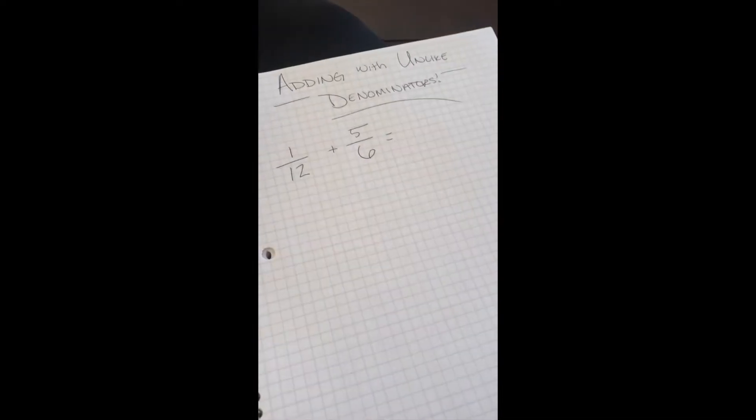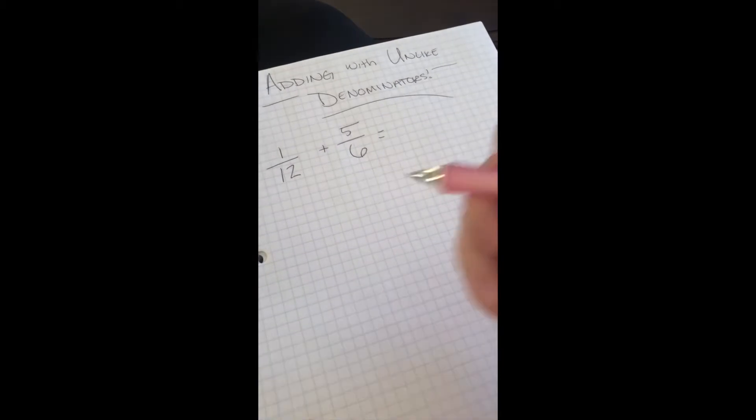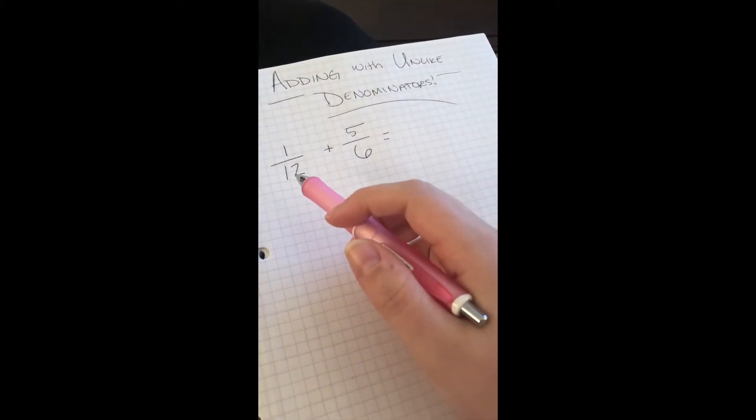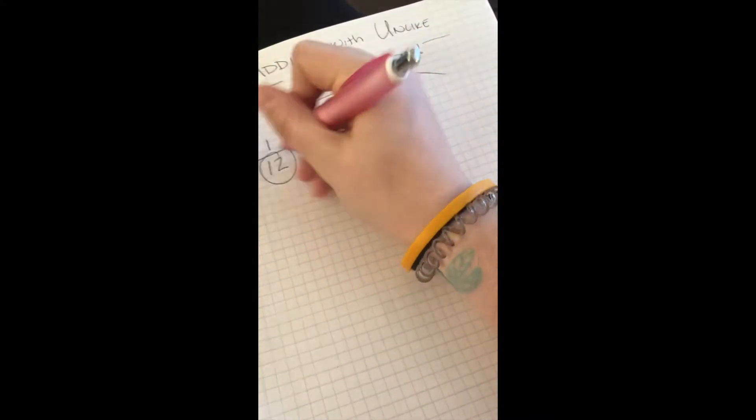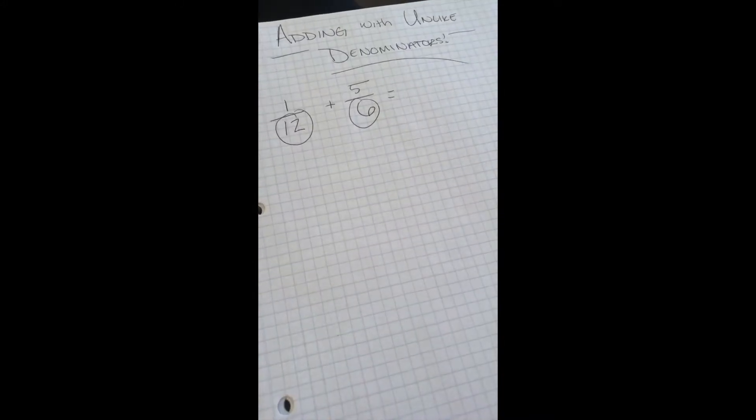Okay, so today you're going to be doing adding with unlike denominators, which is pretty much what you've been doing. So we're going to start with a problem like 1 twelfth plus 5 sixths. Obviously your denominators are different, so you can't just add them like we can do when they're the same.